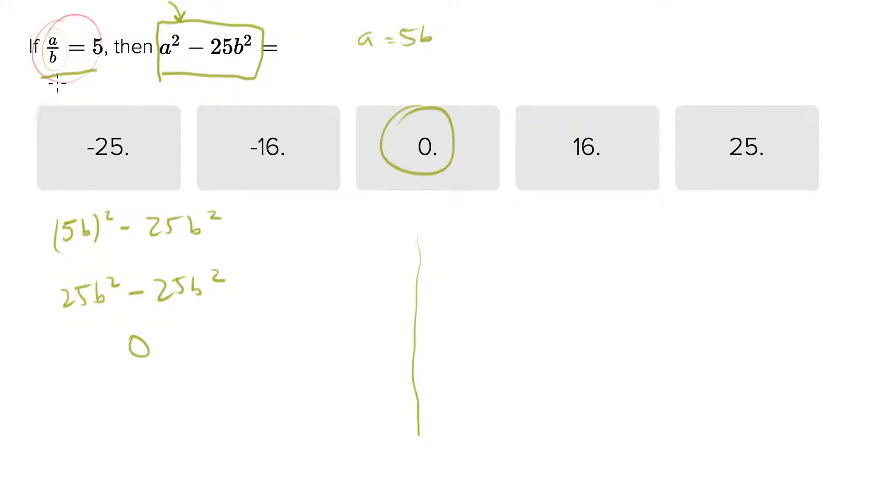You can say they're allowing us to pick whatever we want for a and b, as long as the fraction equals 5, then we're in bounds. So let's just pick numbers. Let's say a equals 5 and b equals 1 hypothetically.